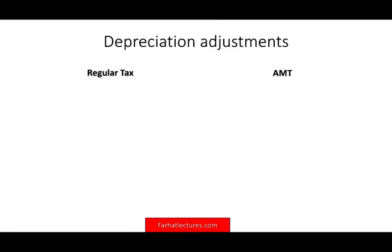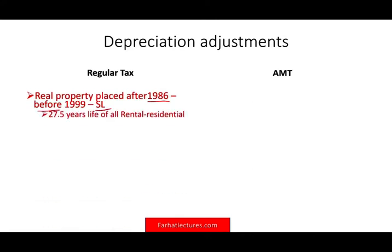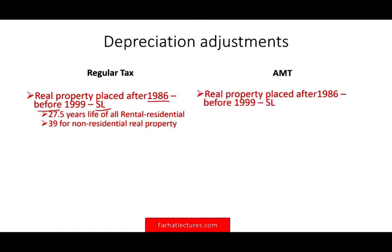Now you might also have depreciation adjustments. If you have a business and you're depreciating assets, you're subject to different depreciation rules. Under regular tax, for real property placed in service after 1986 but before 1999, you use straight-line over 27.5 years for residential rental property or 39 years for non-residential. For AMT, you still use straight-line but over 40 years for both. Congress said not to worry about the 39-year non-residential property adjustment, but you must make an adjustment for the 27.5-year residential rental.